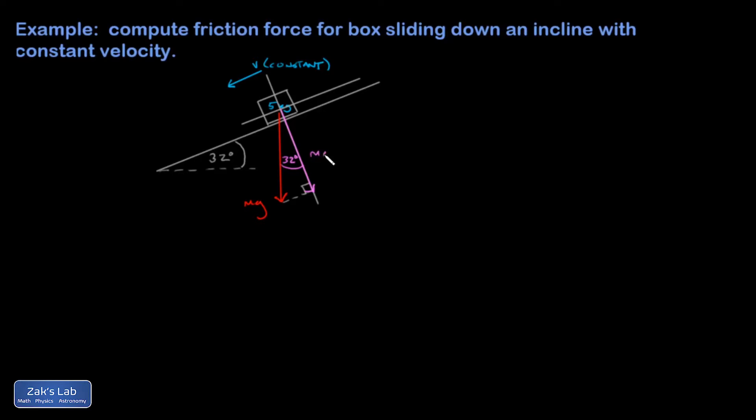So I'm going to have an mg cosine 32 degrees there. And then pointing parallel and down the ramp, I'm going to have an mg sine 32 degrees.